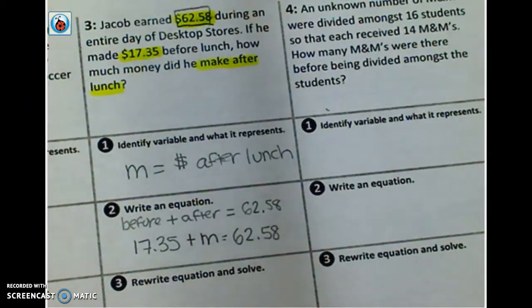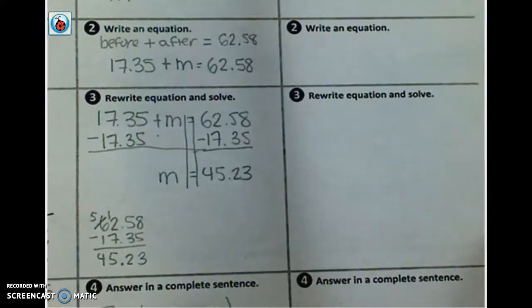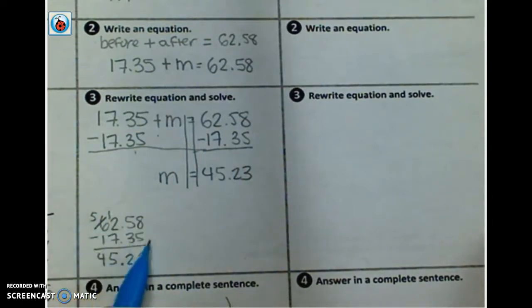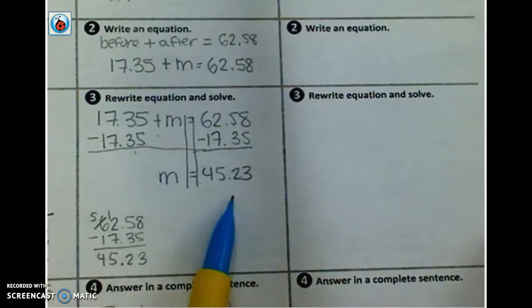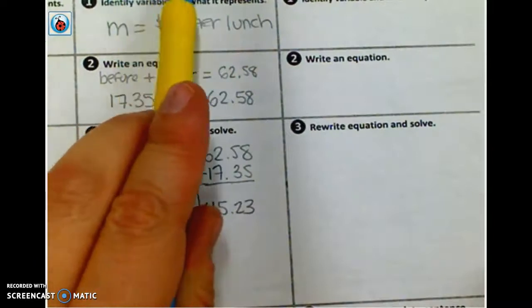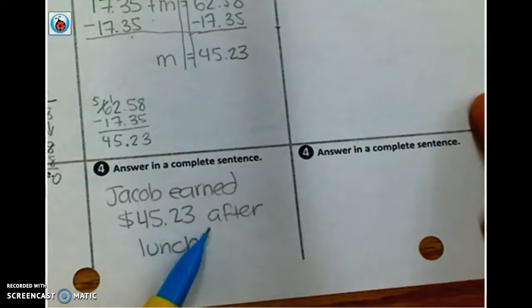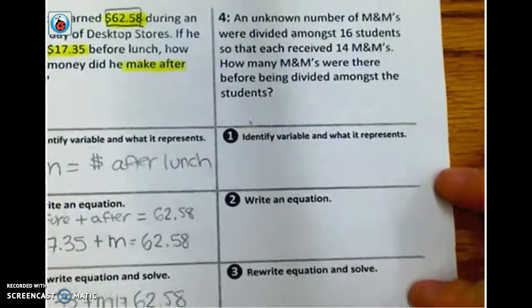Okay. Go ahead and pause the video real quick and see if you can set up and solve. Alright, let's see how you did. There's your equation. We had to subtract $17.35 from both sides. I did my messy math off to the side down here, and I got that it was 45.23. 45 to 23 hundredths. Well again, we want to interpret the meaning of that number. How much money did he make after lunch? Jacob earned $45.23 after lunch. So always put it back into a complete sentence.